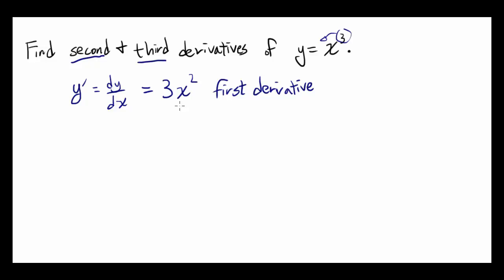The logical way to think about this is that the second derivative is the derivative of the first derivative. So in this case, y double prime, or the second derivative of y with respect to x.